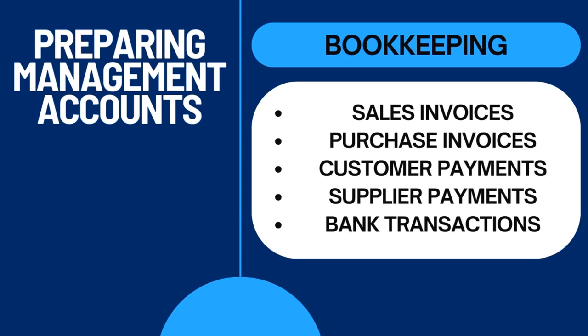First things first, all the bookkeeping must be done for the period that we want to run Management Accounts for. So let's say, hypothetically, we want to run a set of Management Accounts for the last three months — January, February, March 2024. To do that, all the bookkeeping must be done for that period. Double Entry Bookkeeping is best. That will ensure that the Management Accounts are accurate, that the Financial Accounts are accurate, and it will make compiling Management Accounts much easier.